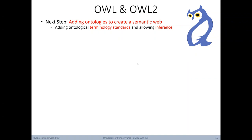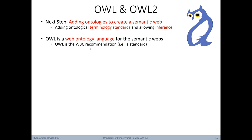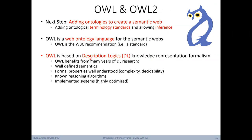The next step involves really adding ontologies to create a semantic web — adding ontological terminology standards that will allow for inference. OWL stands for Web Ontology Language, designed for semantic webs, and is currently the W3C recommendation — the preferred standard. OWL is based on description logics, another knowledge representation formalism, and has benefited from many years of description logics research, which has well-defined semantics, formal properties including complexity and decidability, and known algorithms for reasoning. It has also been implemented in a highly optimized way, making it a very efficient framework.